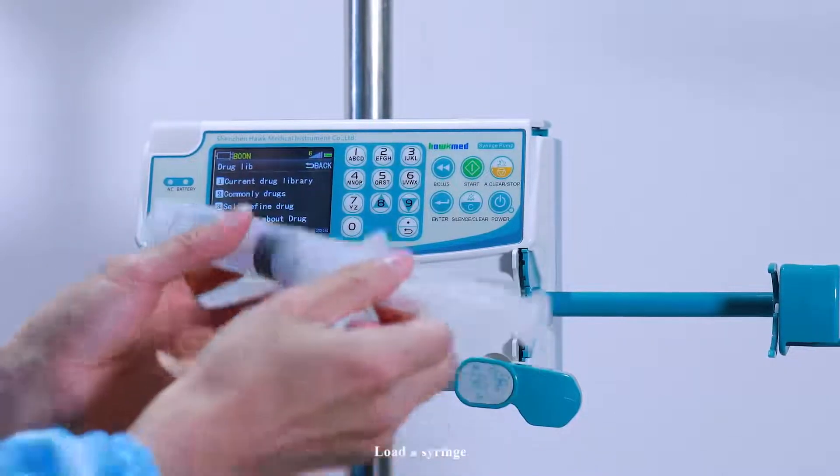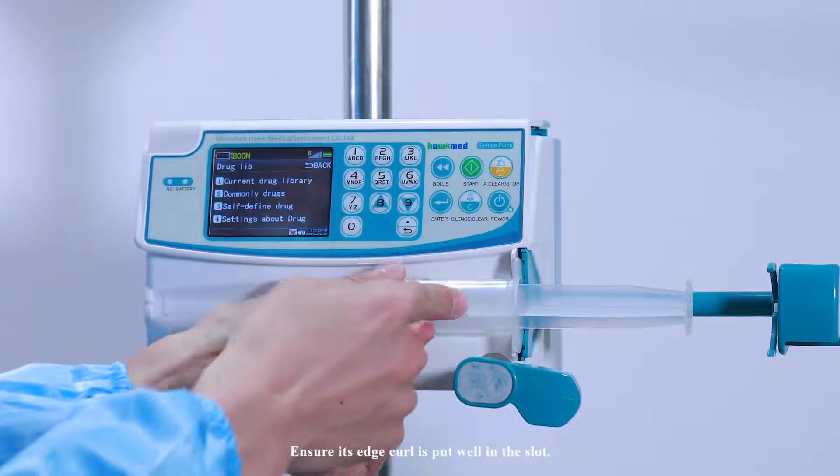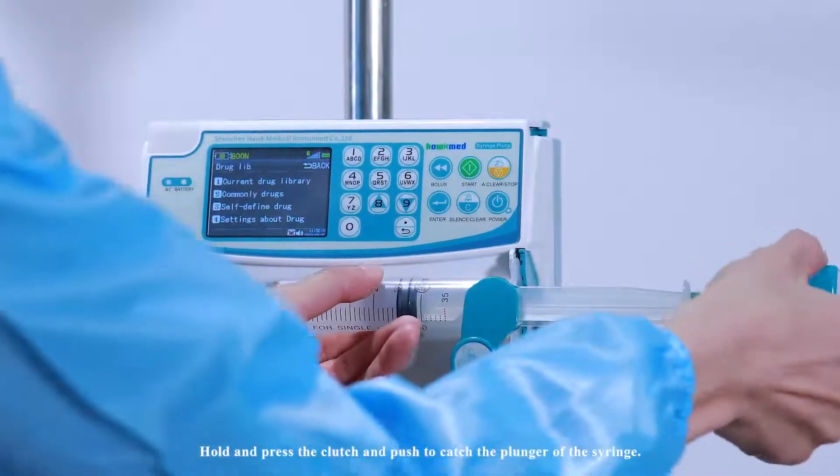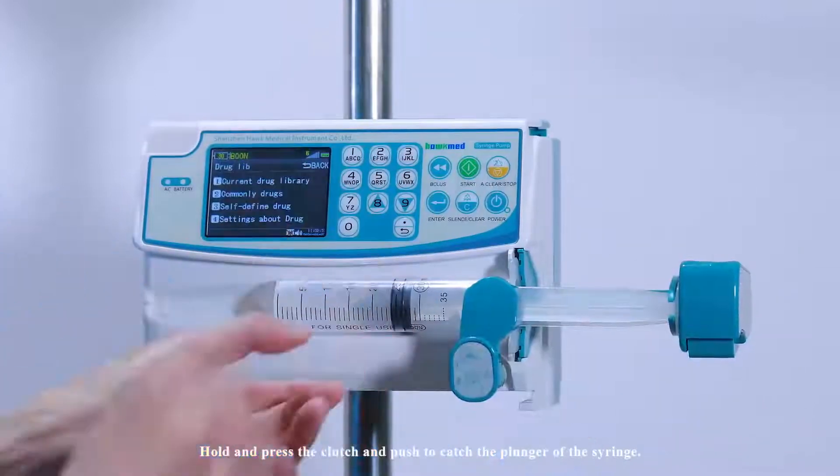Load the syringe. Ensure its flange is put well in the slot. Hold and press the clutch and push to catch the plunger of the syringe.